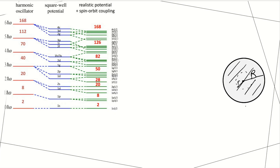In the shell model figure you can see how this degeneracy is removed when adding the spin-orbit coupling, giving the proper model for predicting magic numbers. For this derivation, let's stick to our harmonic oscillator.